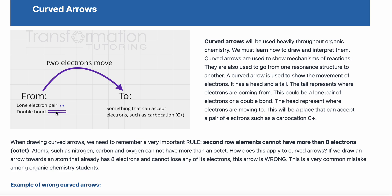Whenever you're drawing resonance, you will draw a curved arrow either from a lone pair of electrons or from a double bond, because it has to come from something that has electrons. Many students make the mistake of drawing a curved arrow from something that does not have electrons, such as a carbocation or a hydrogen. Don't do that — you will always draw it from something that has electrons.